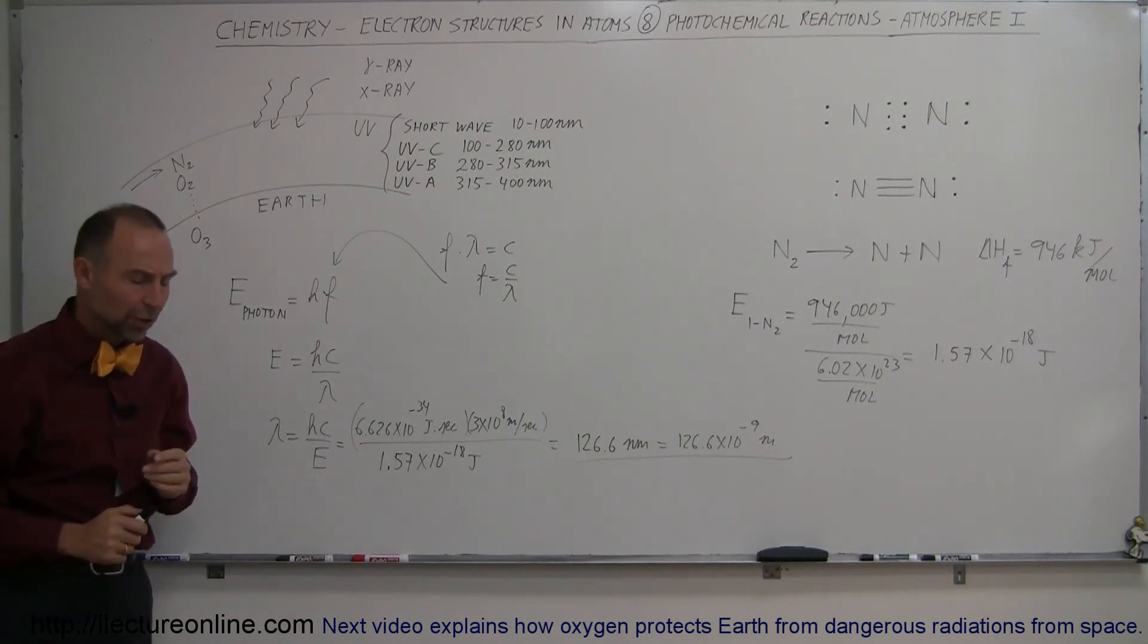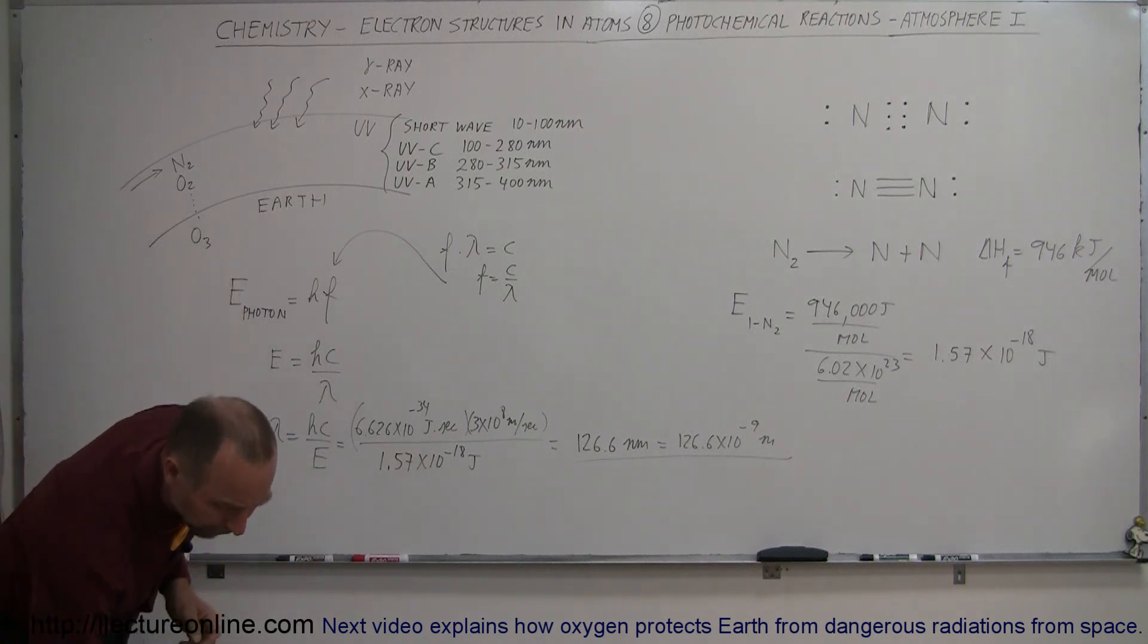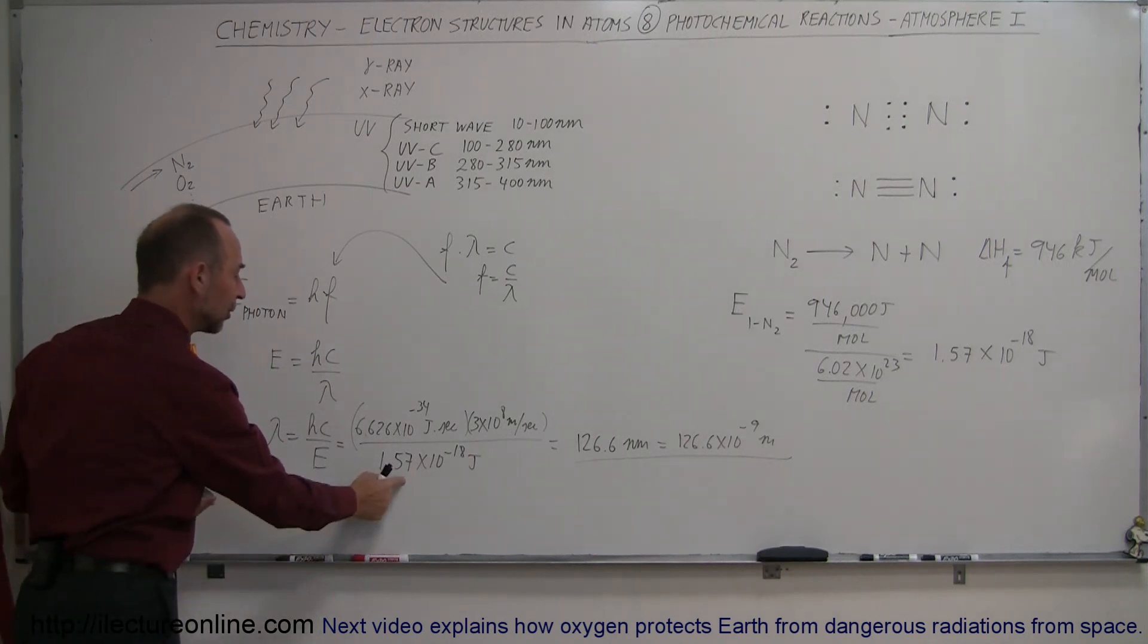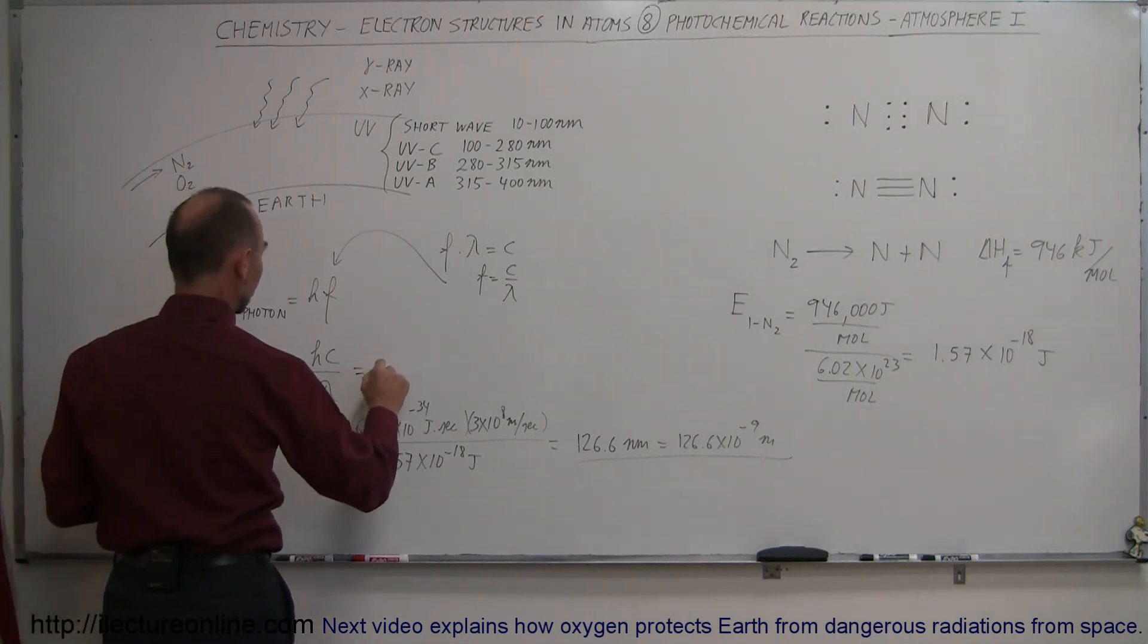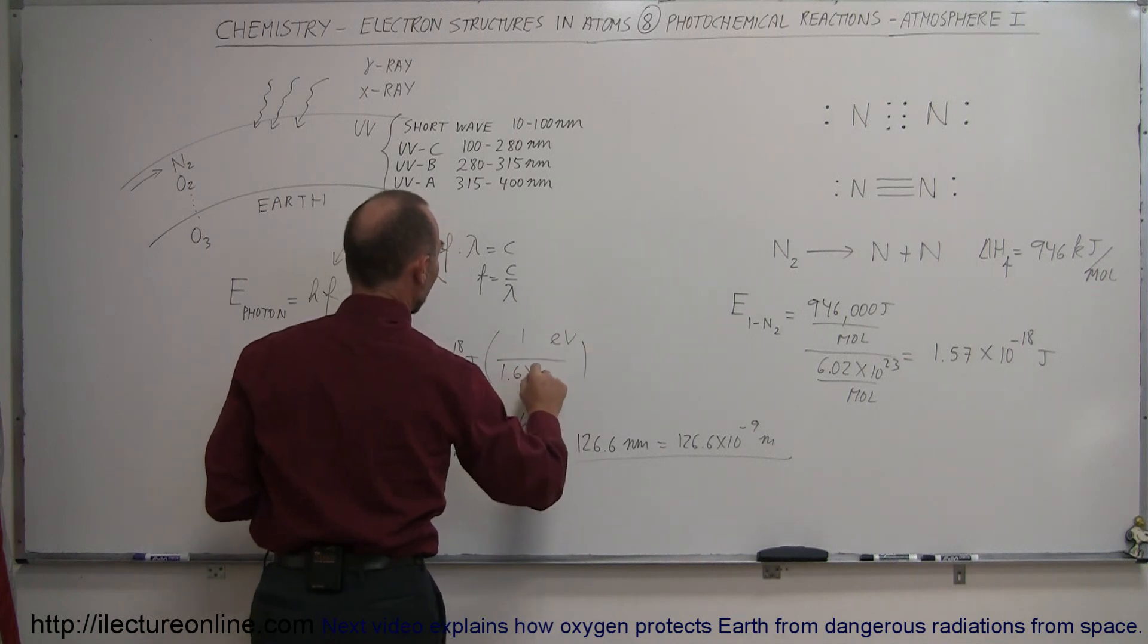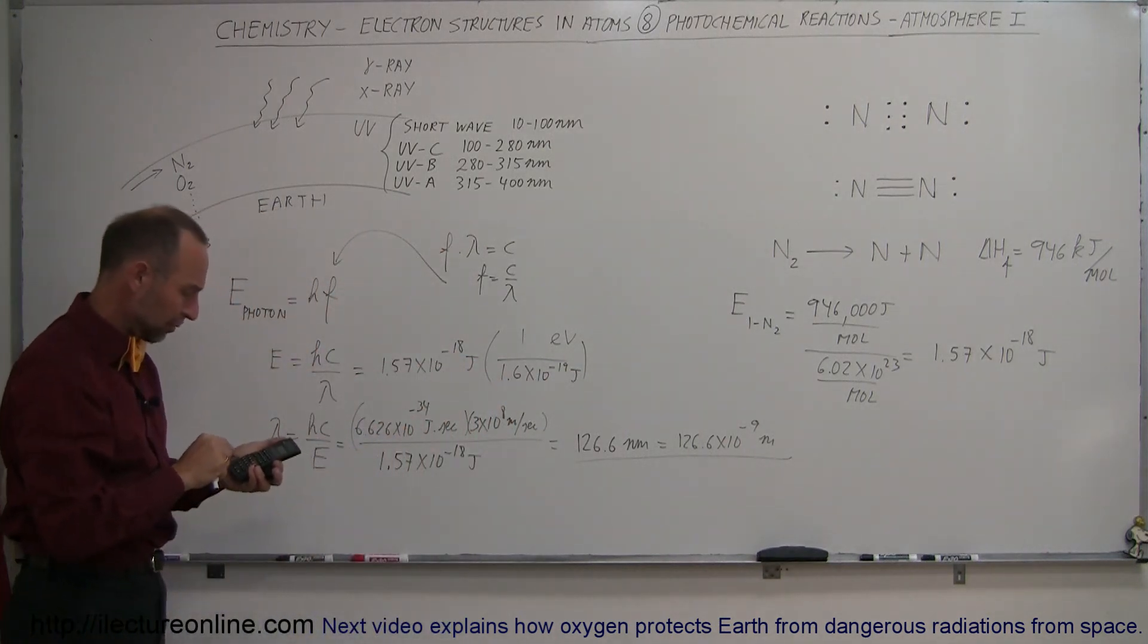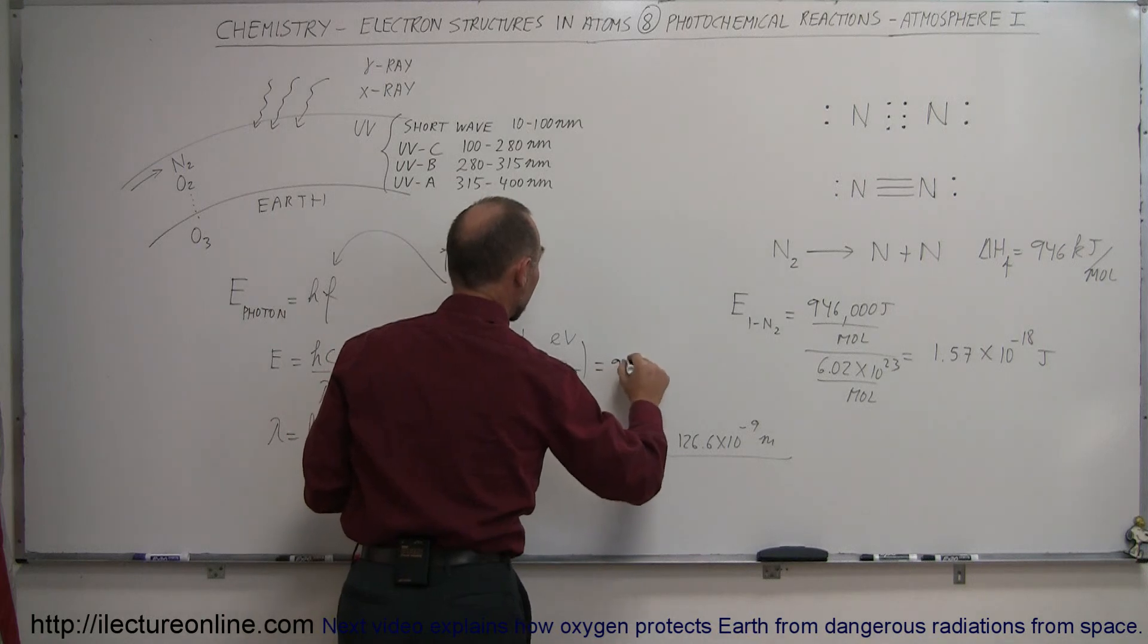Just to get a feel for it, there's also a conversion factor from joules to electron volts. Sometimes we like to look at the energy of a photon in terms of electron volts. A visible light photon is usually somewhere in the neighborhood of two or three electron volts. Let's see how much energy in electron volts one of these carries. If this equals 1.57 times 10 to the minus 18 joules, we'll convert that to electron volts. One electron volt is 1.6 times 10 to the minus 19 joules. We take 1.57e-18 and divide it by 1.6e-19, and we get 9.8 electron volts.